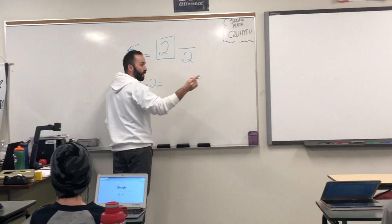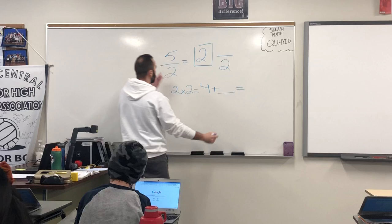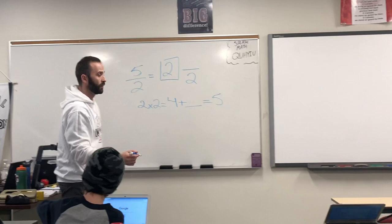Well, that equals what? Isabel? Four. Four. Okay. So two times two is four. I still need to figure out what my numerator is. In order to do that, let's think. What's four plus what number gives me five? What number is that? Shea? One. One.